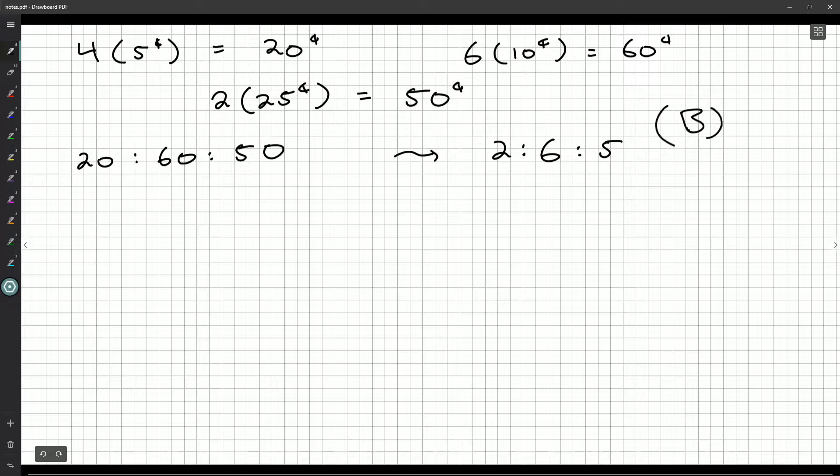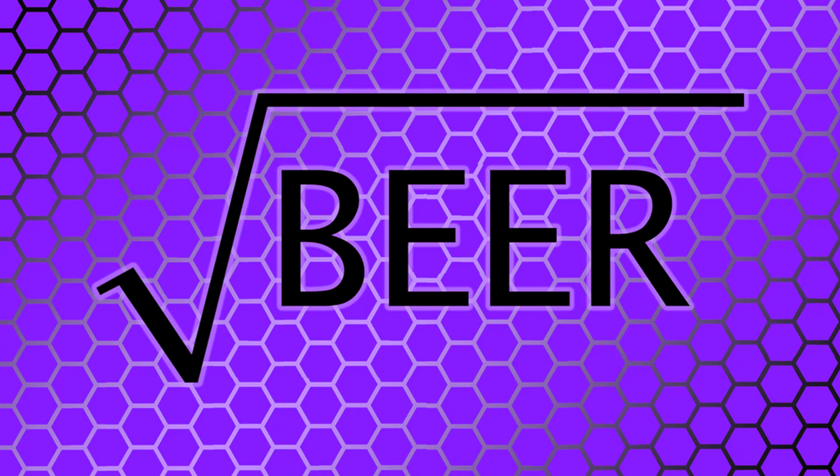So we will bubble in B. Okay. So that finishes off part A. If we've done everything right, we've got 50 marks. We're going to move into part B next time with question number 11, and I hope to see you there.